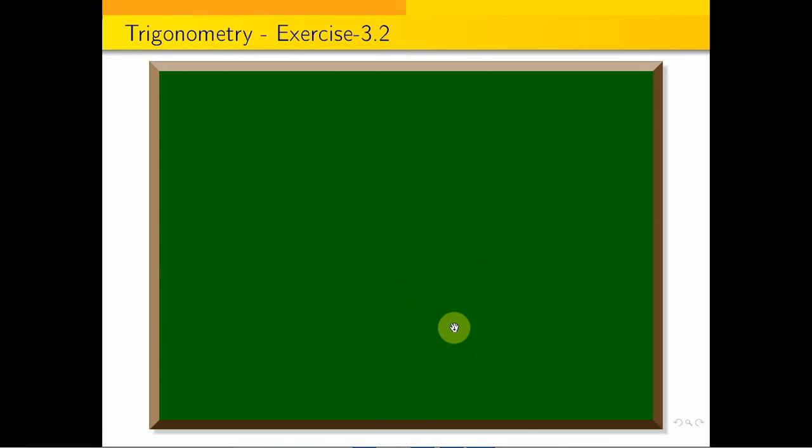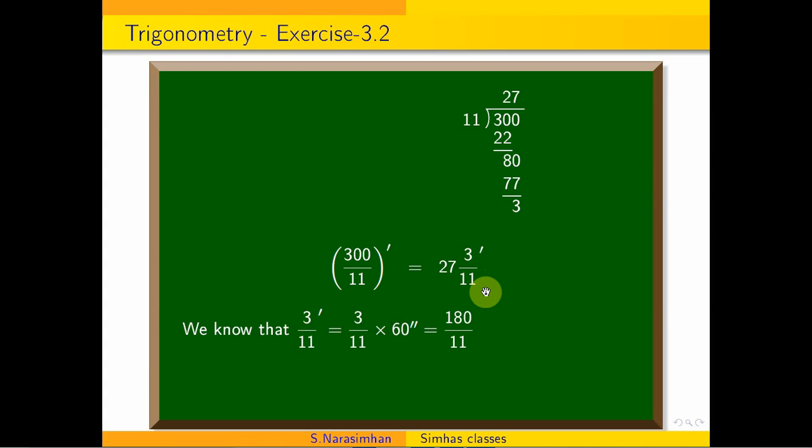300 divided by 11 gives 27 with a remainder of 3/11 minutes.